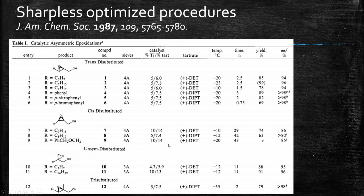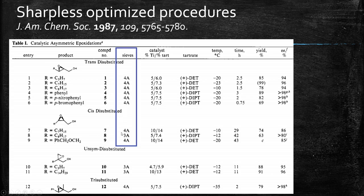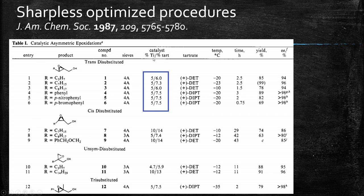Here's some data from the 1987 article. You can see a lot of examples: trans-disubstituted epoxides can be made, cis-disubstituted alkenes as substrates, and gem-disubstituted cases with really good yields and good EEs across the board. Tri-substituted substrates are included as well. You can see that molecular sieves — three, four, or even five angstrom — are added, and the catalyst is now down to five or six percent. A slight excess of the tartrate is still required for best results.